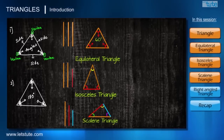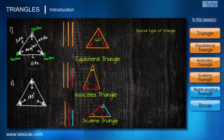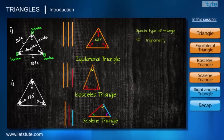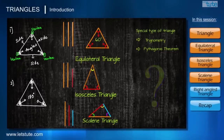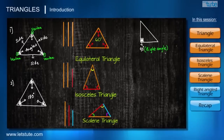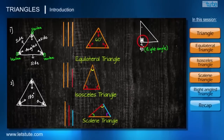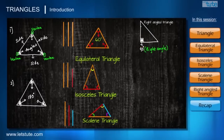Now let's learn about the most important and special type of triangle. Many concepts are based on this triangle — like trigonometry and the Pythagorean theorem. Yes, it is a right-angled triangle. An angle of 90 degrees is always called a right angle. So whenever in a triangle any angle measures 90 degrees, that triangle is called a right-angled triangle.